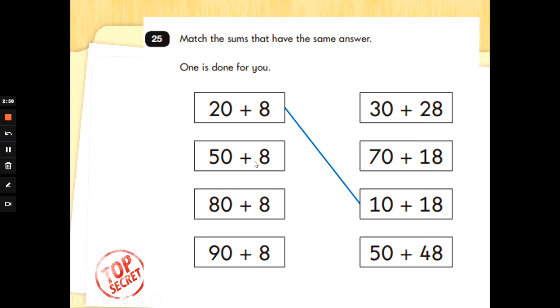So 50 add 8, 8 pops a zero. 50 add 8 is 58. We need 58 on this side. So let's just start with the top: three tens add two tens. Yes, three add two is five, so 58. And 30 add 28, that's the same.